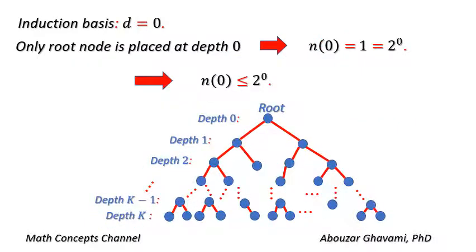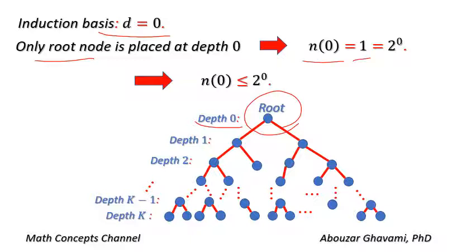Our induction basis is depth zero. Only the root node is placed at depth zero. Therefore N of zero equals one, and one equals two to the power of zero. Thus N of zero is less than or equal to two to the power of zero, and we have proved the induction basis.